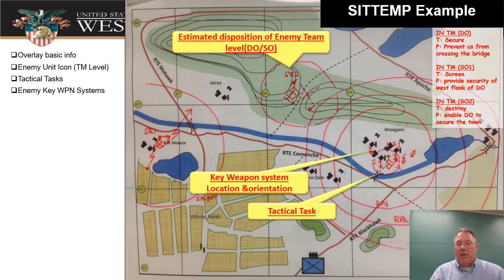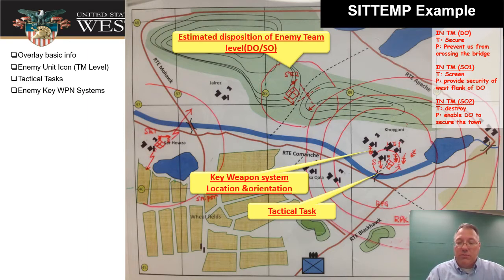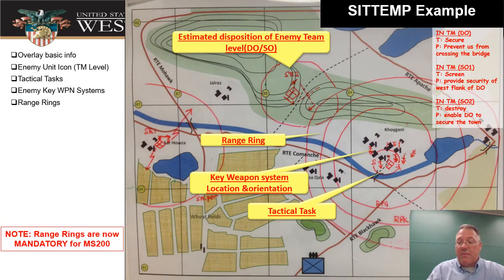Then we're going to put down their key weapon systems. We put those icons down, but the orientation actually matters — we want to show where they're located and which way they're pointed, to shape the battlefield. Where do we think they're going to put those weapons? That comes back to where would I put them if I was trying to do that mission.